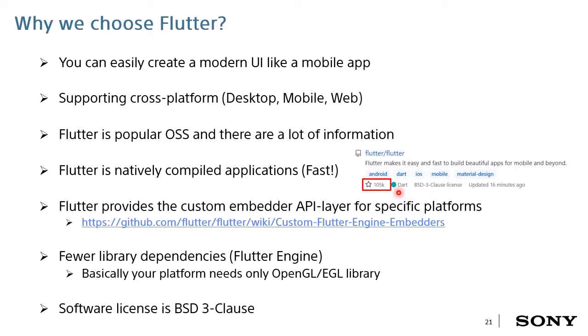Here is Flutter's total number of stars in GitHub — it is in the top 20 in the GitHub ranking. Flutter provides a custom embedded API layer for porting to specific platforms, making porting very easy. In addition, Flutter needs few dependent libraries — basically only OpenGL or EGL. Finally, the software license is BSD 3.